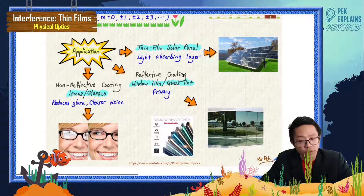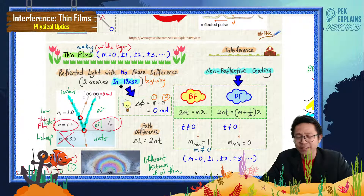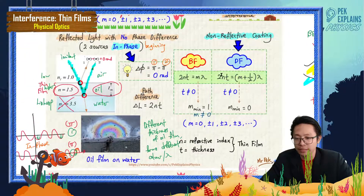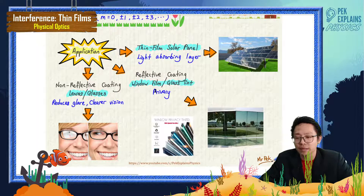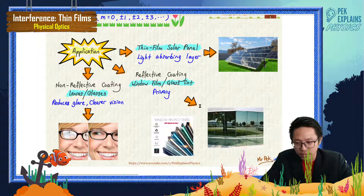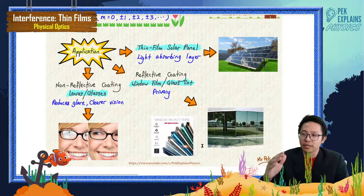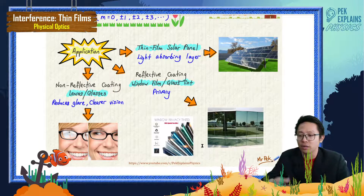The next application is reflective coating and non-reflective coating. For in-phase sources, you use non-reflective coating; for two anti-phase sources, you use reflective coating. Reflective coating is used for window glass tinting — for privacy. You see tinted glass on cars: the person outside cannot see inside, but the passenger inside can see outside.